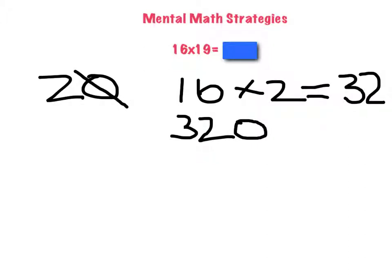Then we have to minus 320 minus 16. As we know, we have to cross 2 out and borrow 1 from 2. That will make 10.